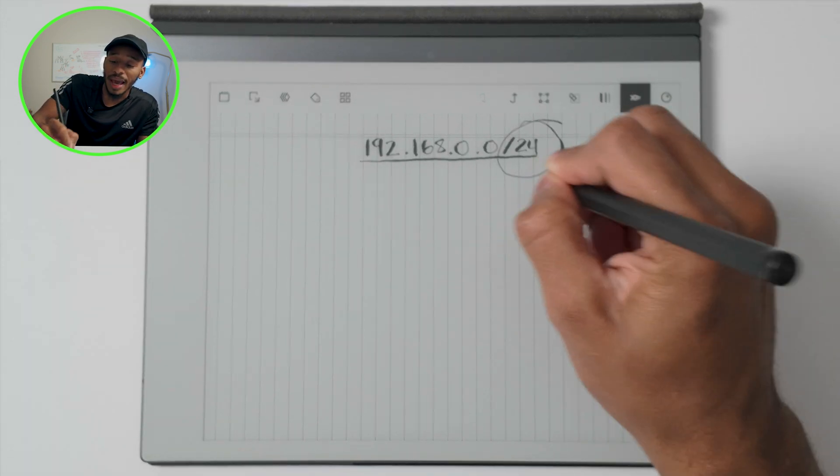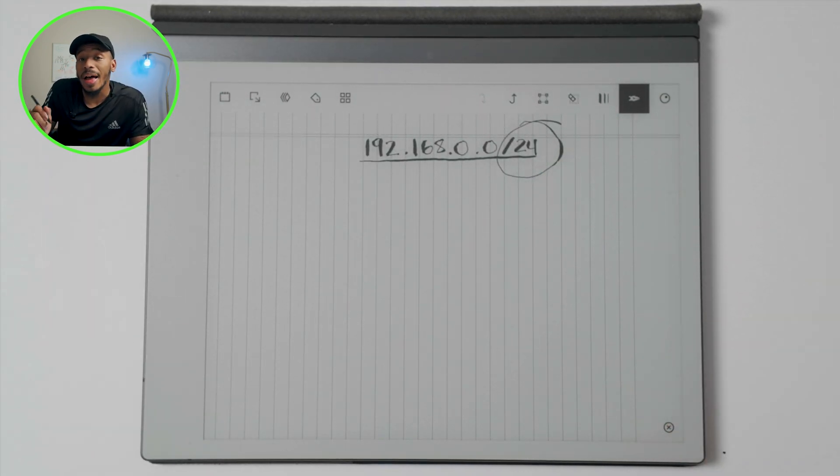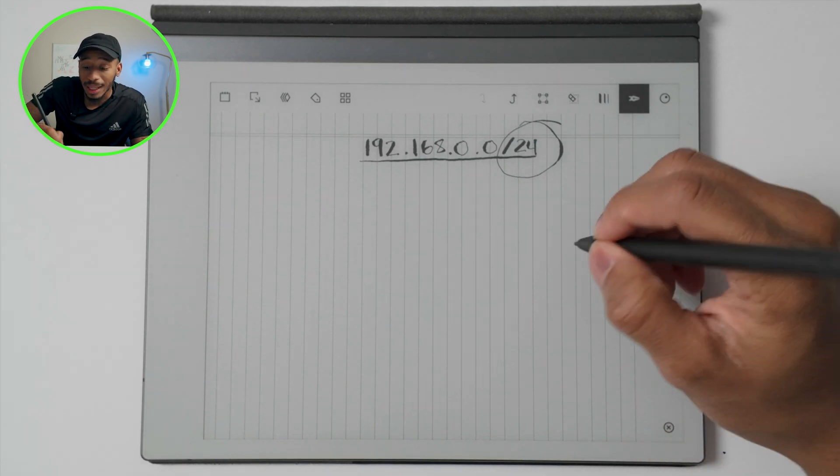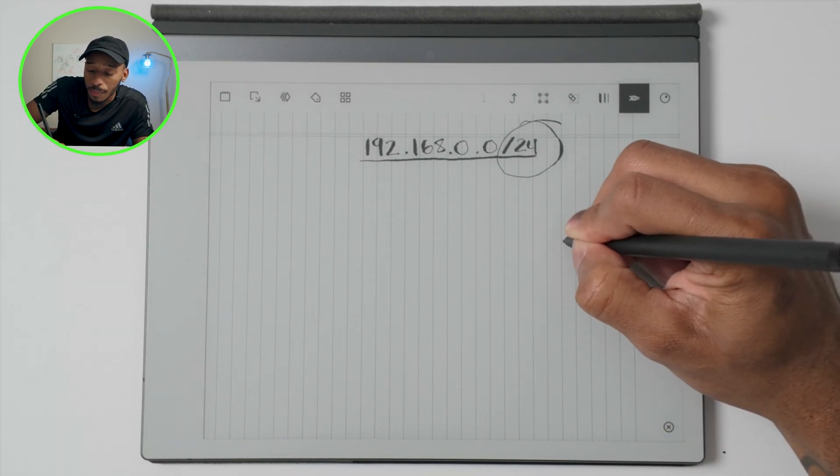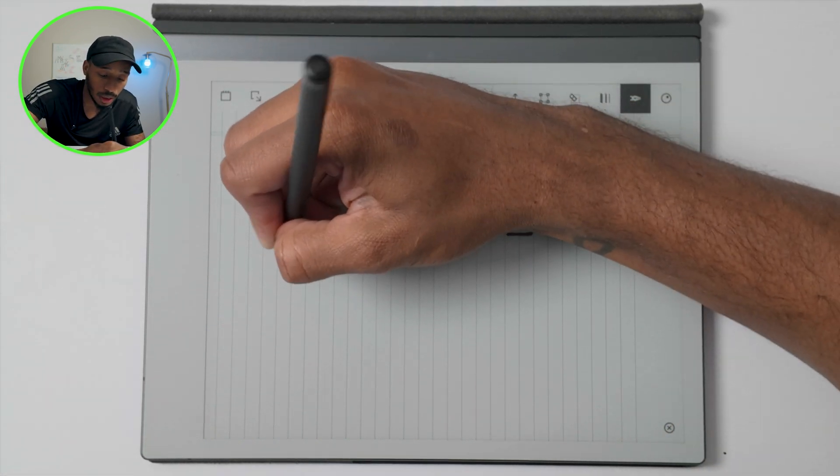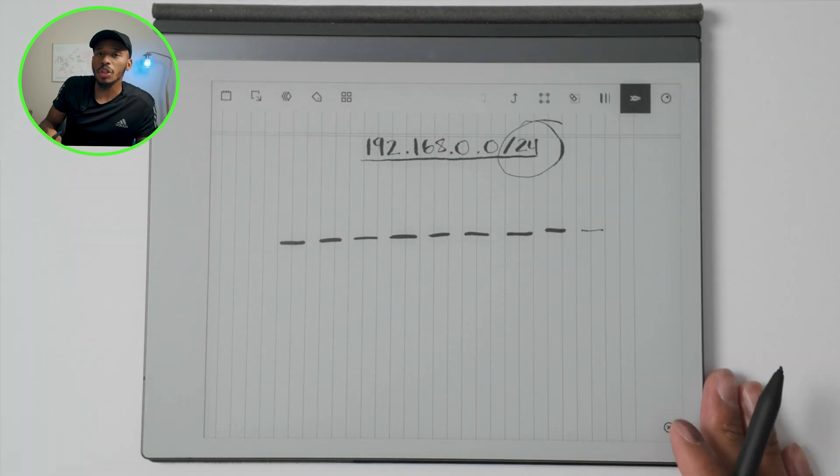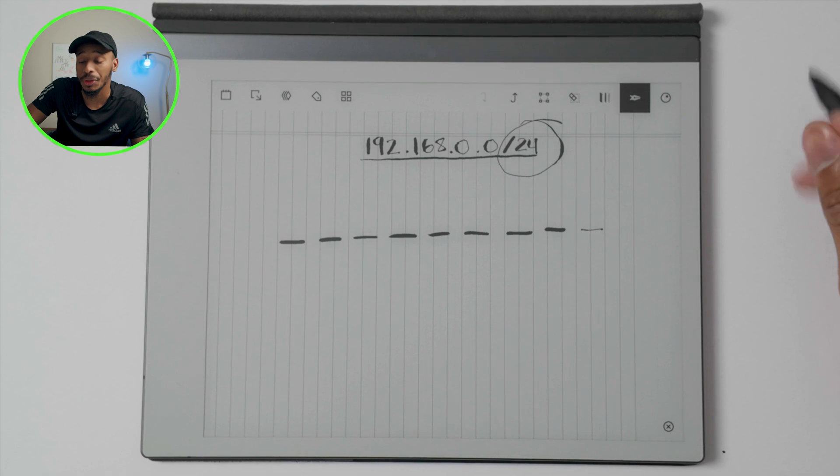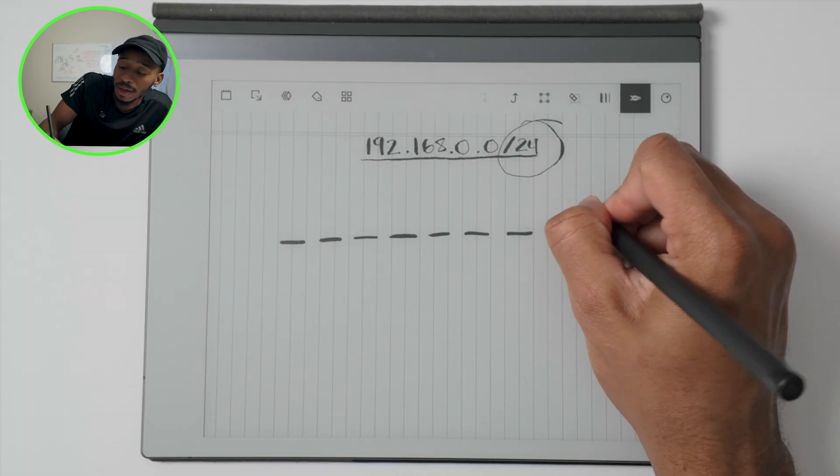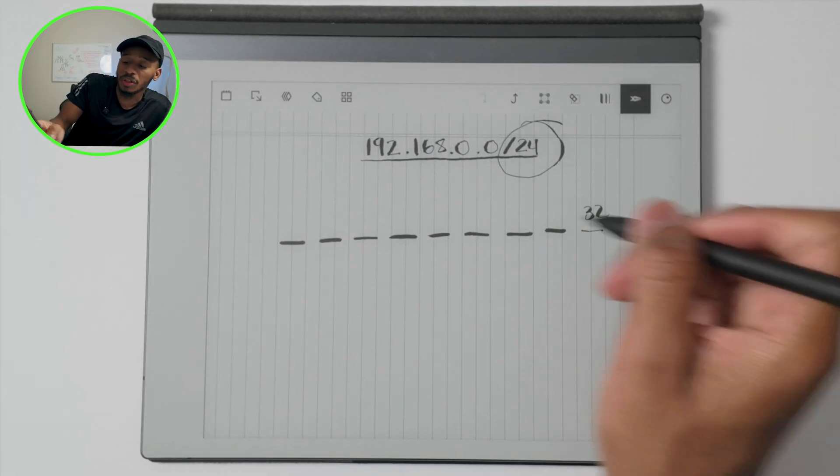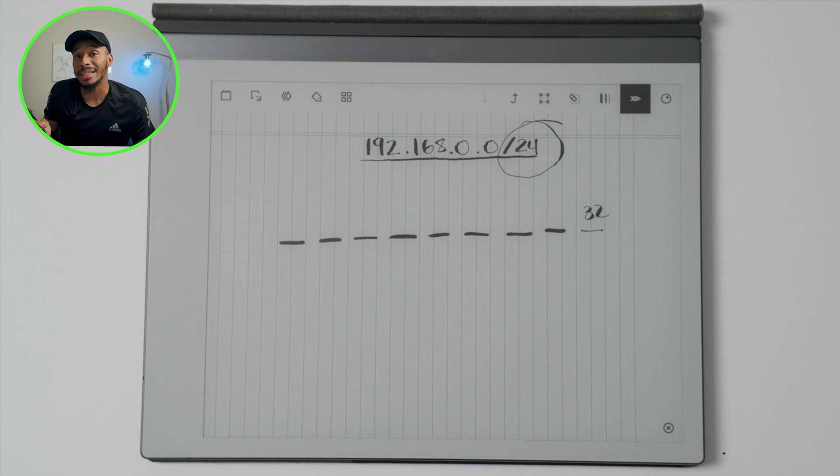Now in order to calculate the total number of hosts, the first thing I'll have you do is draw eight lines or nine lines on your paper. And what we're going to do is we're going to start with the highest CIDR, which is a slash 32. And we're just going to write that number 32 at the top. And we're going to write the rest of the numbers in descending order.